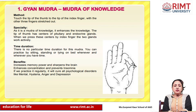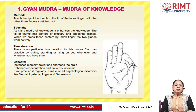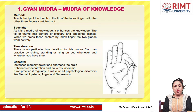Number one is Gyan Mudra, also known as the Mudra of Knowledge. Method: touch the tip of the thumb to the tip of the index finger with the other three fingers stretched out. As it is the Mudra of Knowledge, it enhances knowledge. The tip of the thumb has centers of the pituitary and endocrine glands. When we press these centers with the index finger, the two glands work actively. There is no particular time duration — you can practice it sitting, standing, or lying down whenever you have time. Benefits: it increases memory power and sharpens the brain, enhances concentration, and prevents insomnia. If practiced regularly, it will cure psychological disorders like mental stress, hysteria, anger, and depression.